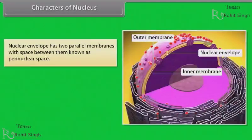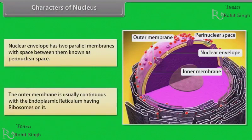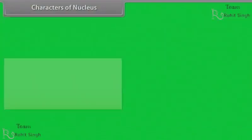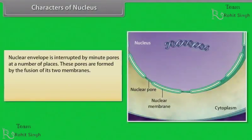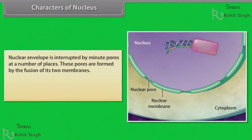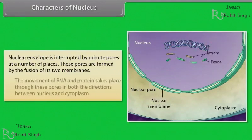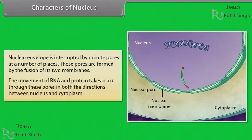The nucleus contains nuclear matrix and one or more spherical bodies called nucleoli. Nuclear envelope has two parallel membranes with space between them known as perinuclear space. The outer membrane is usually continuous with the endoplasmic reticulum, having ribosomes on it. The nuclear envelope is interrupted by minute pores at a number of places, formed by the fusion of its two membranes. The movement of RNA and protein takes place through these pores in both directions between nucleus and the cytoplasm.